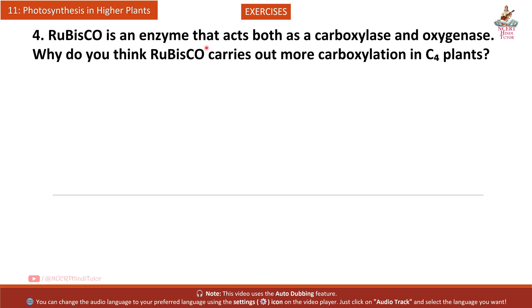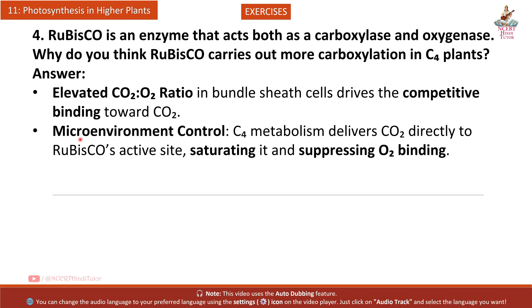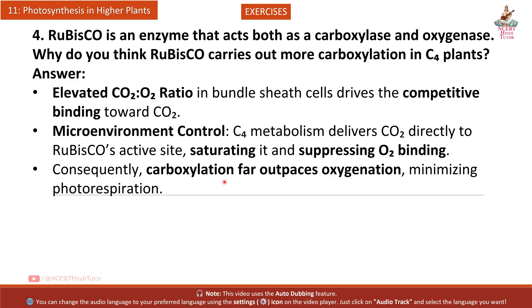Rubisco saturation: High local CO2 levels around Rubisco minimize photorespiration and maximize carboxylation efficiency. Spatial separation of initial fixation in mesophyll and Calvin cycle in bundle sheath reduces wasteful O2 fixation, boosting net carbon gain per photon absorbed. Question 4: Rubisco is an enzyme that acts both as a carboxylase and oxygenase. Why do you think Rubisco carries out more carboxylation in C4 plants?